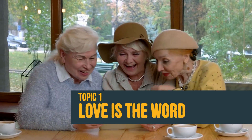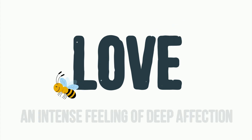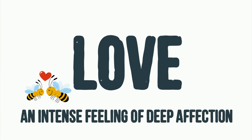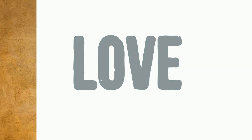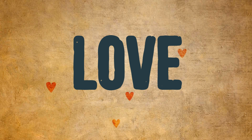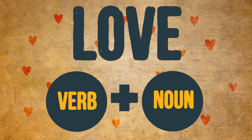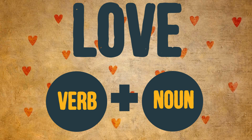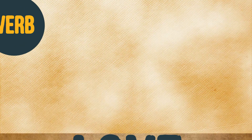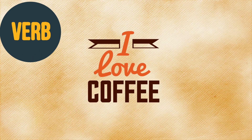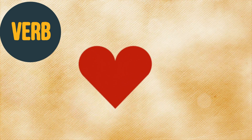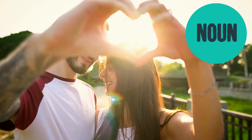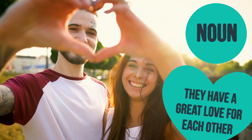Love is the word. Love is a very common word, and you will hear it a lot in English. Its definition is an intense feeling of deep affection. But how do we use this word? Love is both a verb and a noun. As a verb: I love coffee. And as a noun: they have a great love for each other.